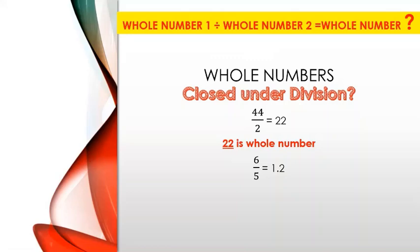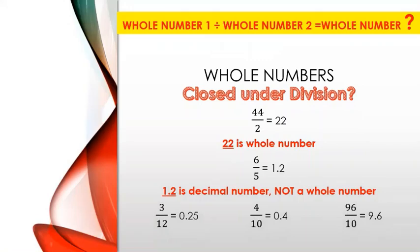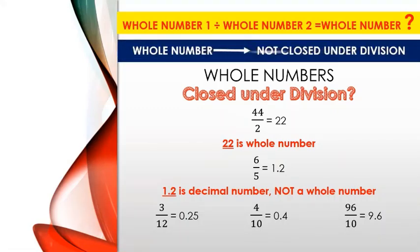The answer is a decimal, which is not a whole number. Similarly, examples such as 3 divided by 12, 4 divided by 10, and 96 divided by 10 all result in decimal numbers, not whole numbers. Hence, we say that whole numbers are not closed under division.